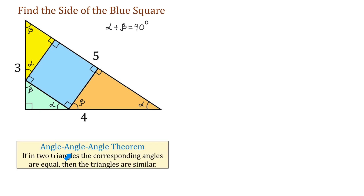Now, let's take a look at the angle-angle-angle theorem. If in two triangles the corresponding angles are equal, then the triangles are similar. In our figure, the large triangle as well as the three smaller triangles have the same angles. So all four triangles are similar, which means the sides of the smaller triangles have the same ratio as the sides of the large triangle — that is 3 to 4 to 5. For example, in the orange triangle, the ratio of the sides is 3 to 4 to 5.